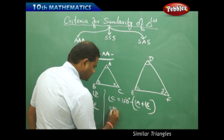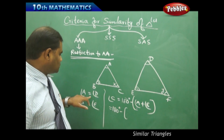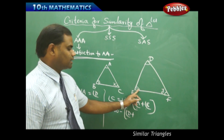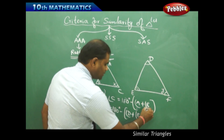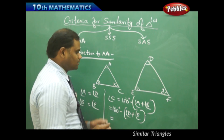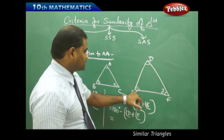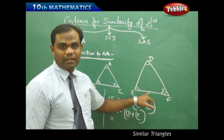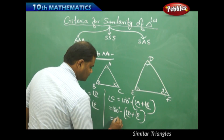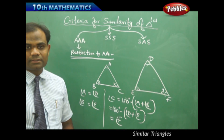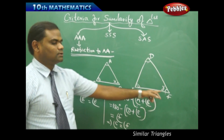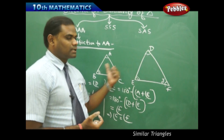On further simplification, angle C equals 180 minus (angle A plus angle B). Since angle A equals angle D and angle B equals angle E, I substitute to get 180 minus (angle D plus angle E). Since the sum of three angles of triangle DEF is 180, this expression 180 minus (angle D plus angle E) is strictly equal to angle F. Therefore, this concludes that angle C is equal to angle F.